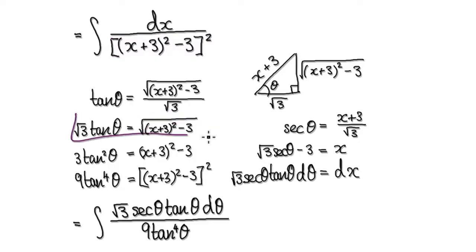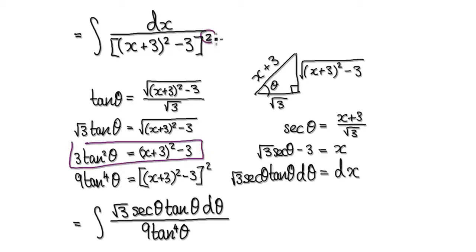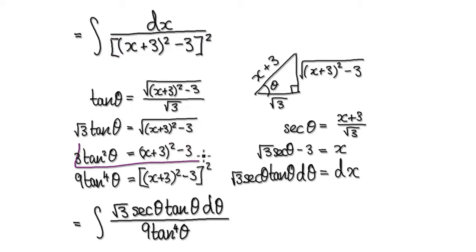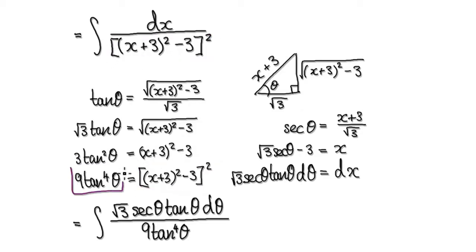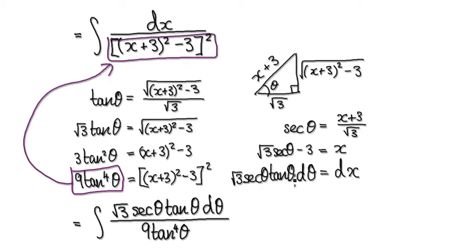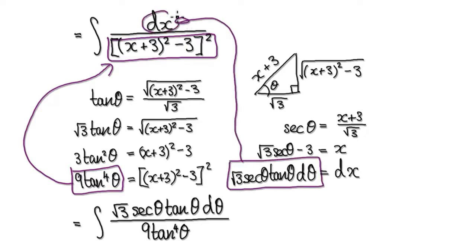So from here, square both sides, that will then give us this, but then we still need this square — at the moment we've got this, we need the square here. So from here, square both sides again, that will then give us this. So now this is exactly the same as this. So we can put this into here, into this whole thing here. And then our dx, we can put this into our dx here. So this whole thing here will then become this.